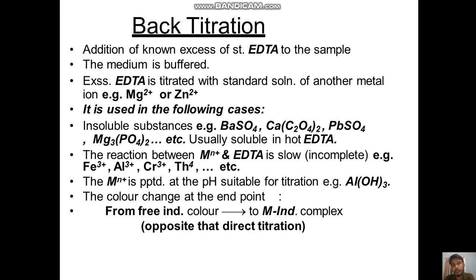Back titration is used in the following cases. First, when insoluble substances are present — for example, BaSO4 and PbSO4. These insoluble substances are usually soluble in hot EDTA. Second, when the reaction between the metal and EDTA is slow or incomplete — for example, metals like La and Cr.